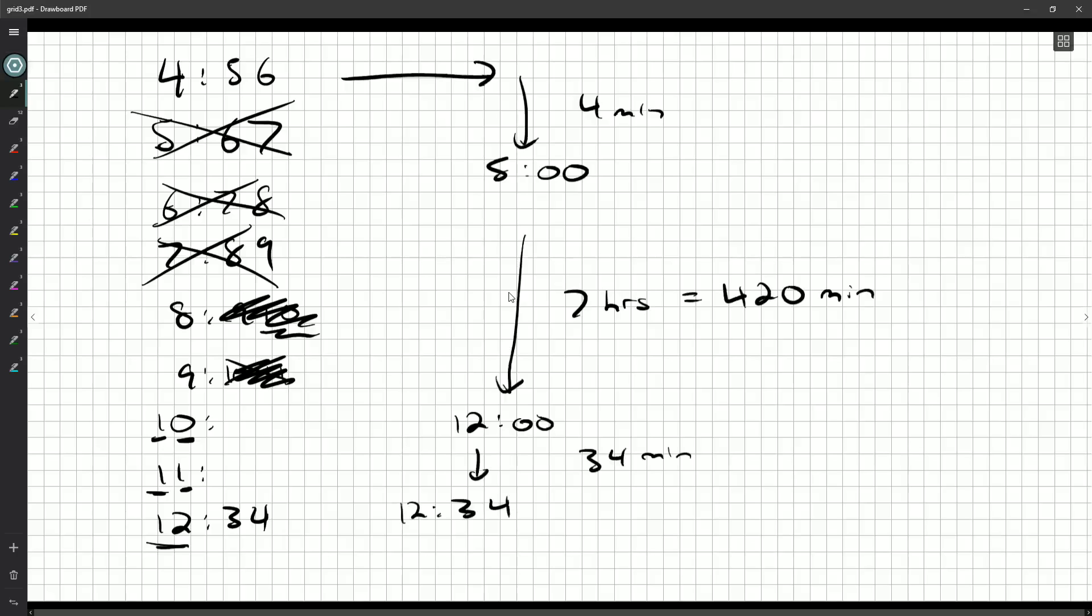Okay, so 4 and 34 is 38. 420 plus 38 is 458.